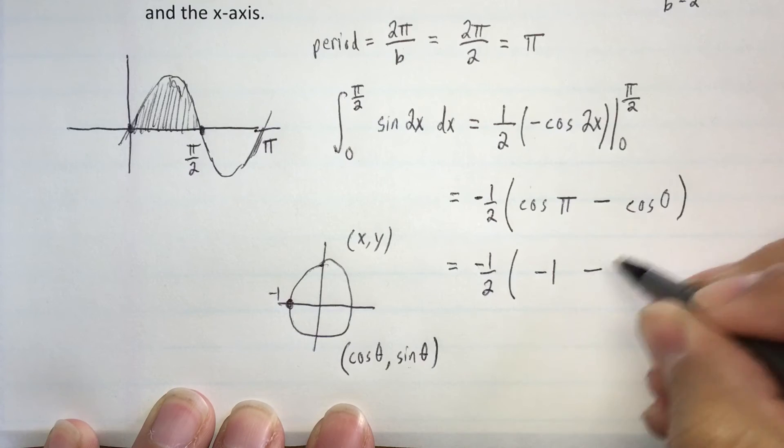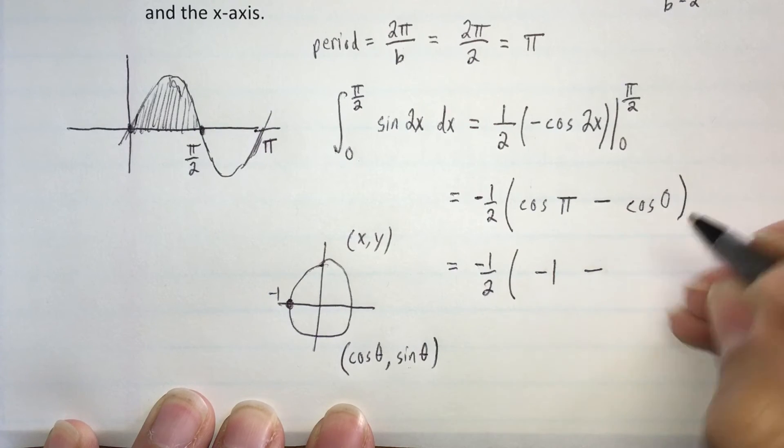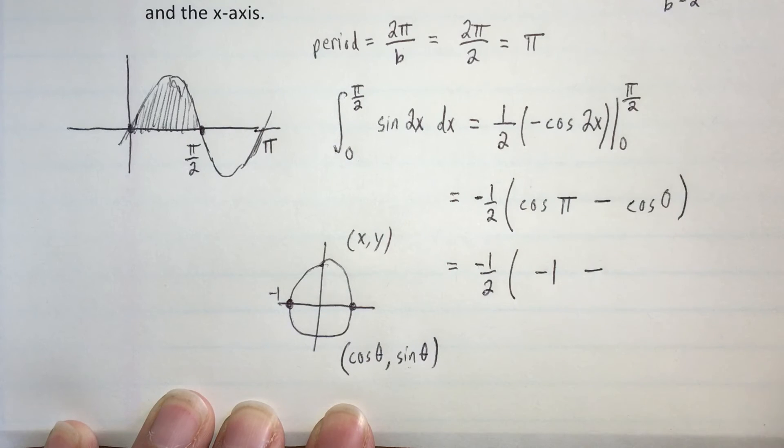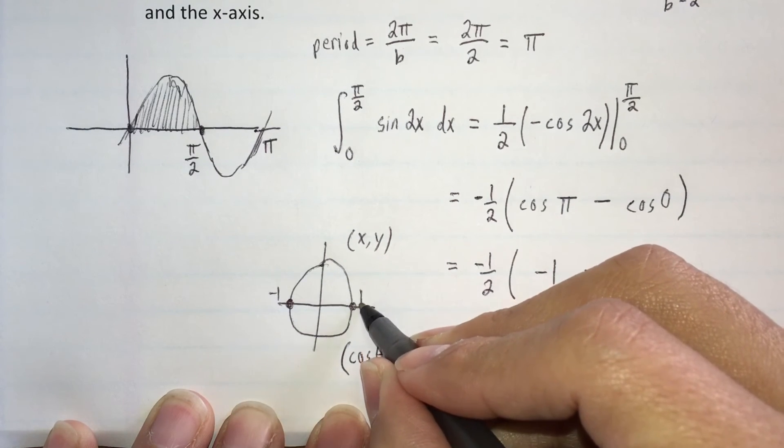And now we have to subtract the cosine of 0. The 0 degrees is over here, so the cosine of 0 is 1.